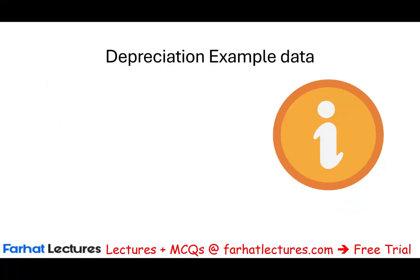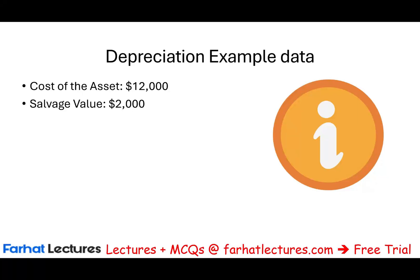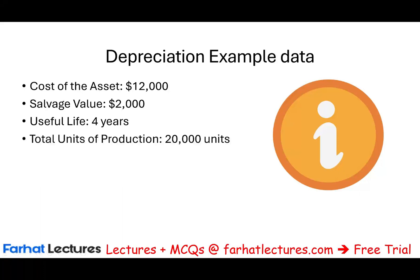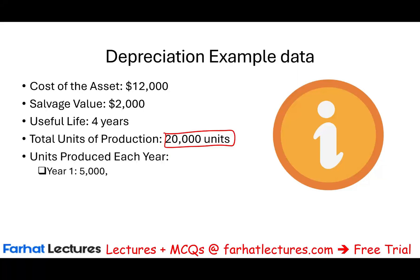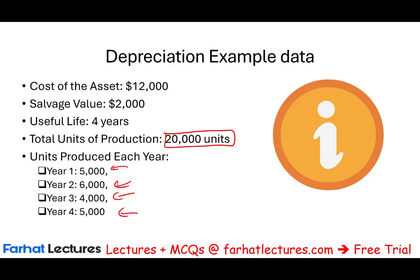The best way to illustrate depreciation is with an example. Assume we purchase an asset — machinery, a vehicle — for $12,000. This asset has a salvage value of $2,000, meaning once we're done with it, we're going to get $2,000. This asset is expected to last for four years. Also, from a units of production perspective, it's expected to produce 20,000 units total: 5,000 units in year one, 6,000 in year two, 4,000 in year three, and 5,000 in year four.